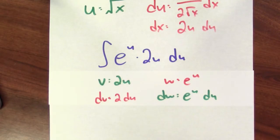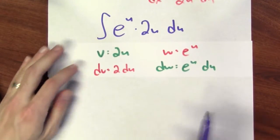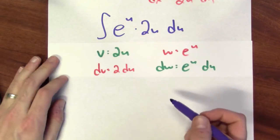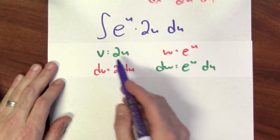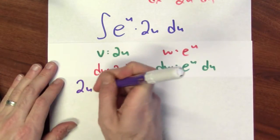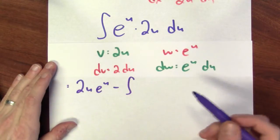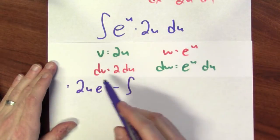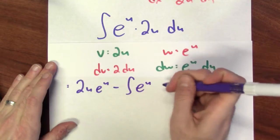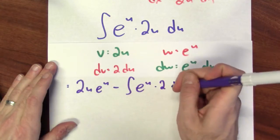In that case, what does parts tell me? Parts then tells me that this integral is the same thing as 2u e to the u minus the integral of w dv, which is e to the u times 2 du.